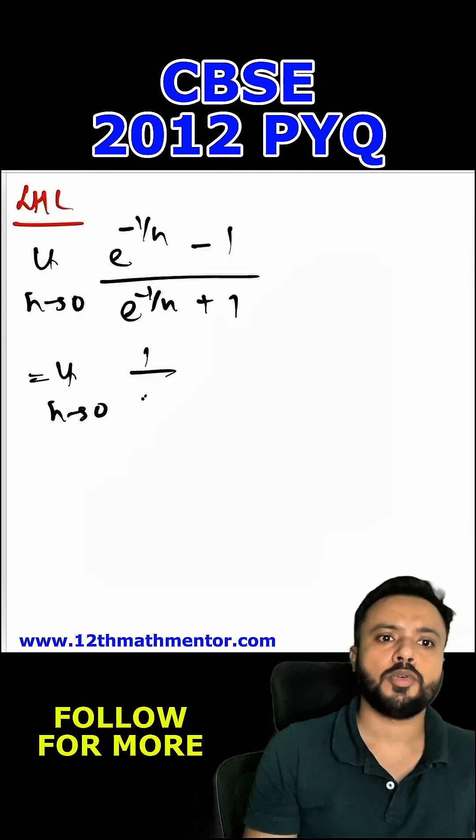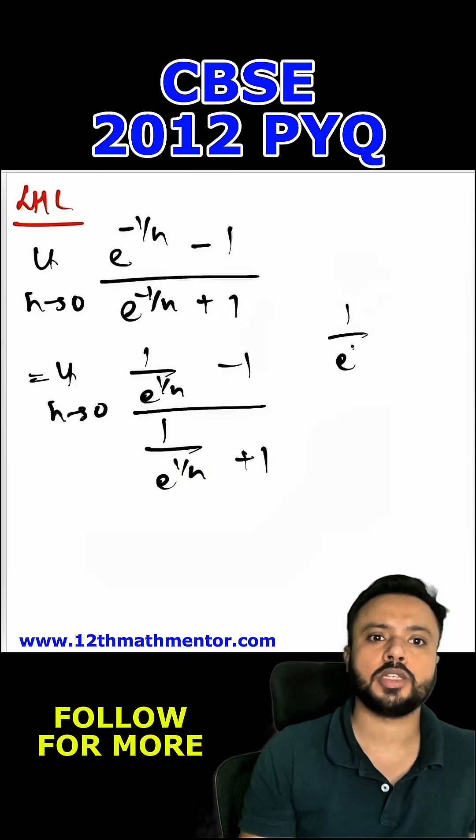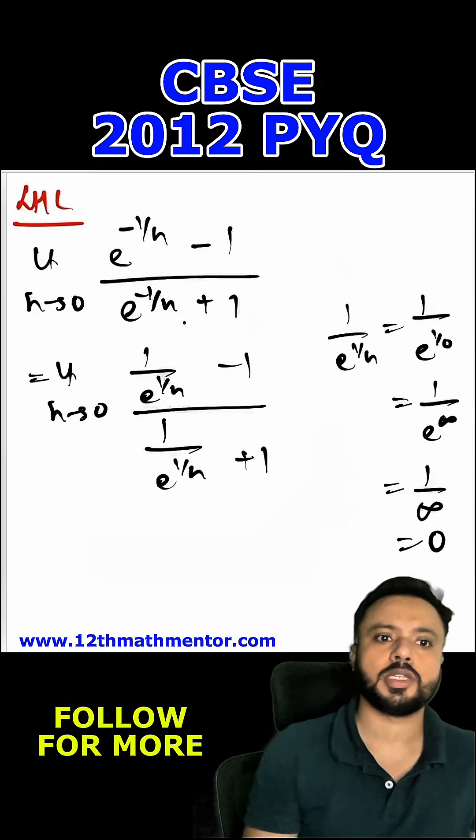Now I can substitute h value directly. 1 upon e raised to the power 1 by h, if I substitute h equal to 0, I'll get 1 upon e raised to the power 1 upon 0 which is 1 upon e raised to the power infinity. E raised to the power infinity is infinity and anything upon infinity is 0. So this value and this value will come out as 0. Hence the LHL will come out to me as minus 1 upon 1 which is negative 1.